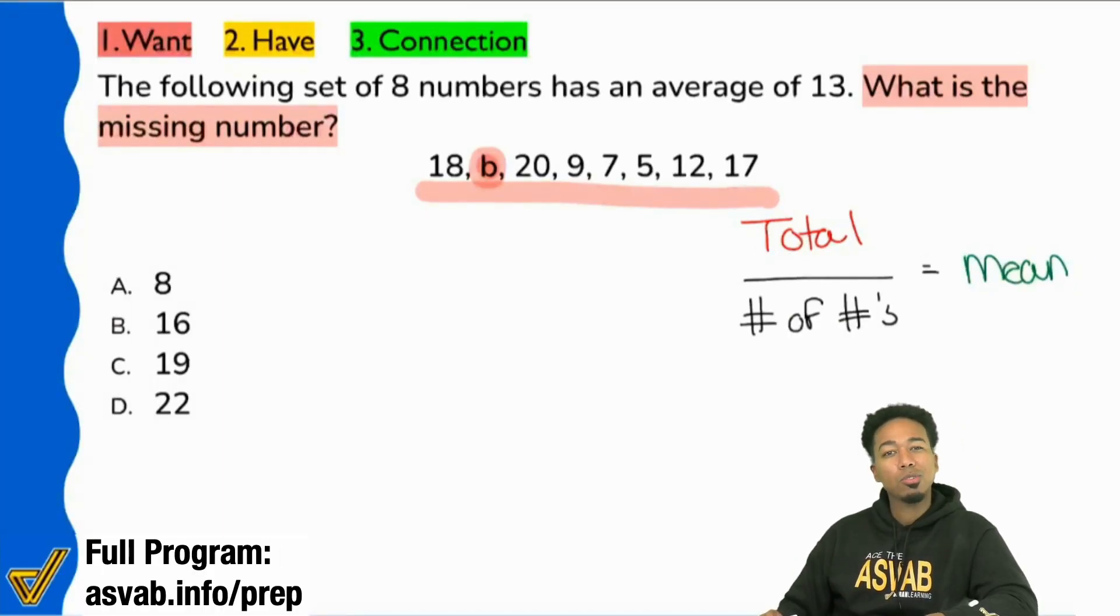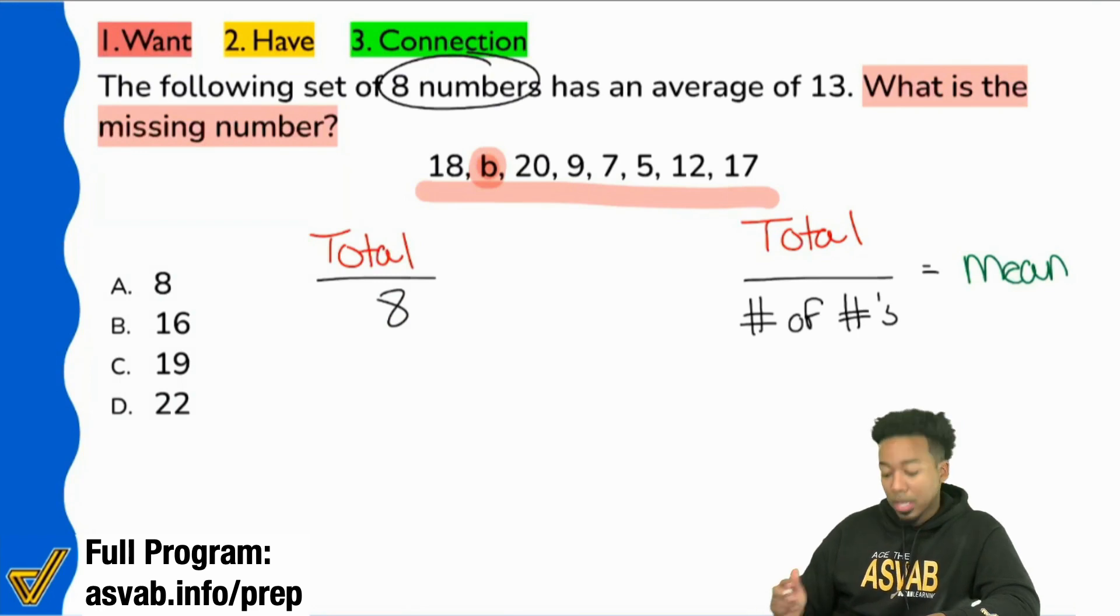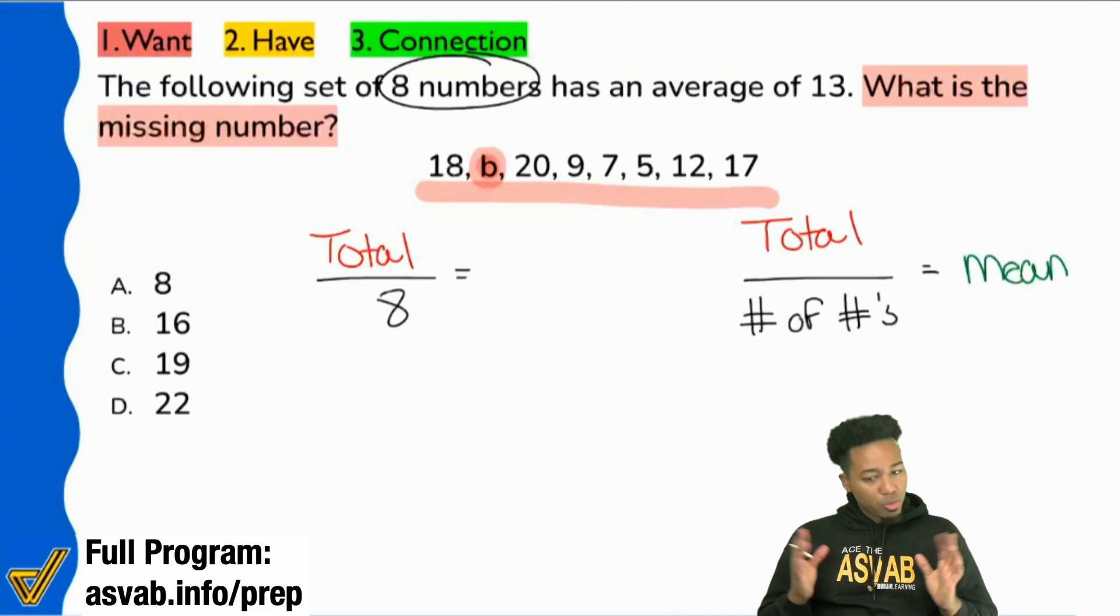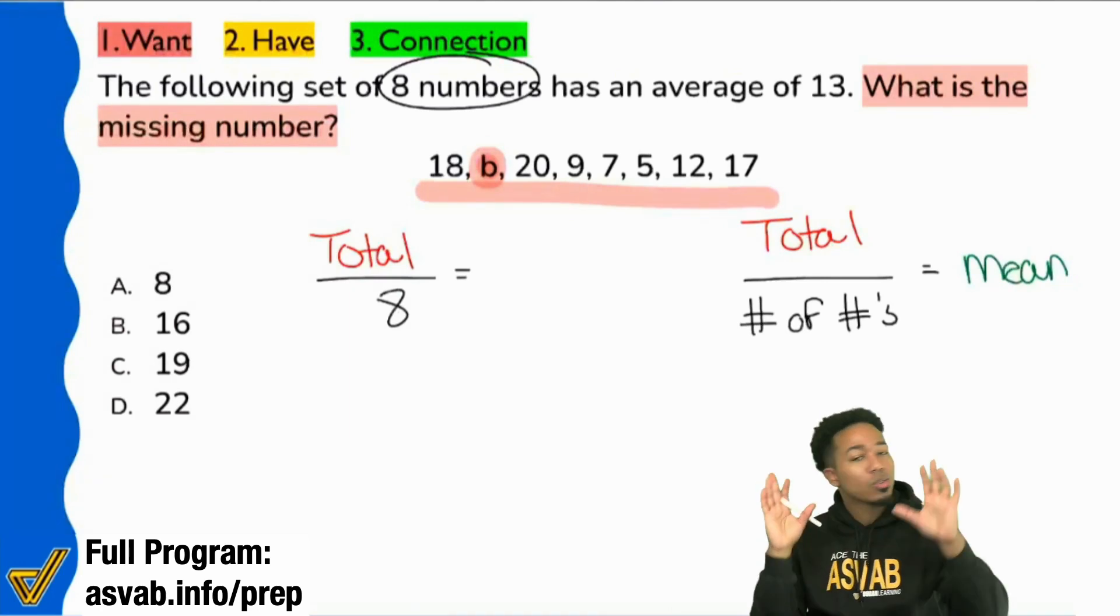The number of numbers, how many numbers do we have? We have eight. So we'll just say our total divided by eight, because we have eight numbers. That's supposed to give us what? When we divide our total by eight, when we run through the formula, we're allegedly supposed to get 13. Exactly. Allegedly we're supposed to get 13.